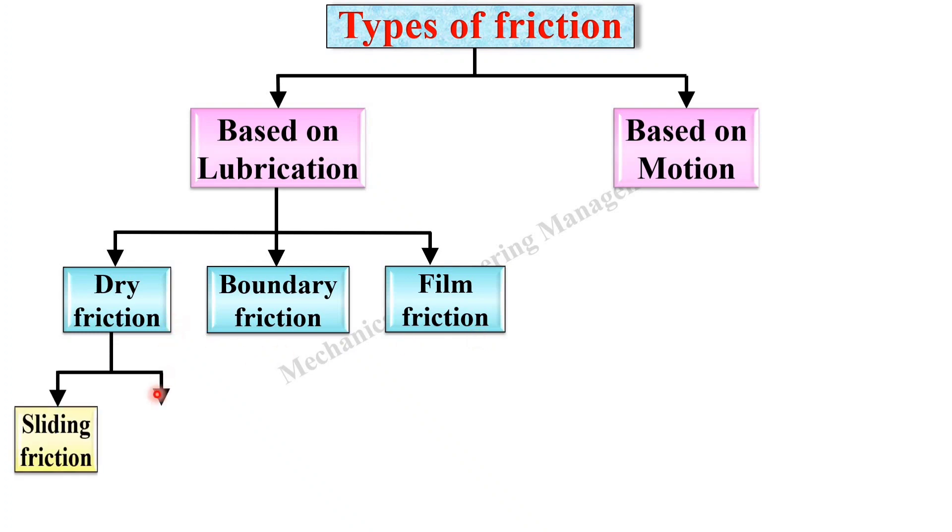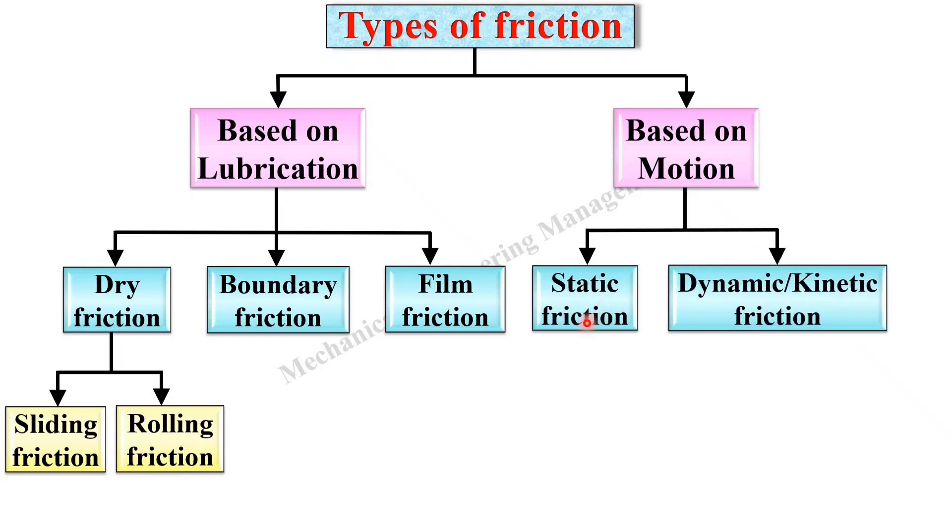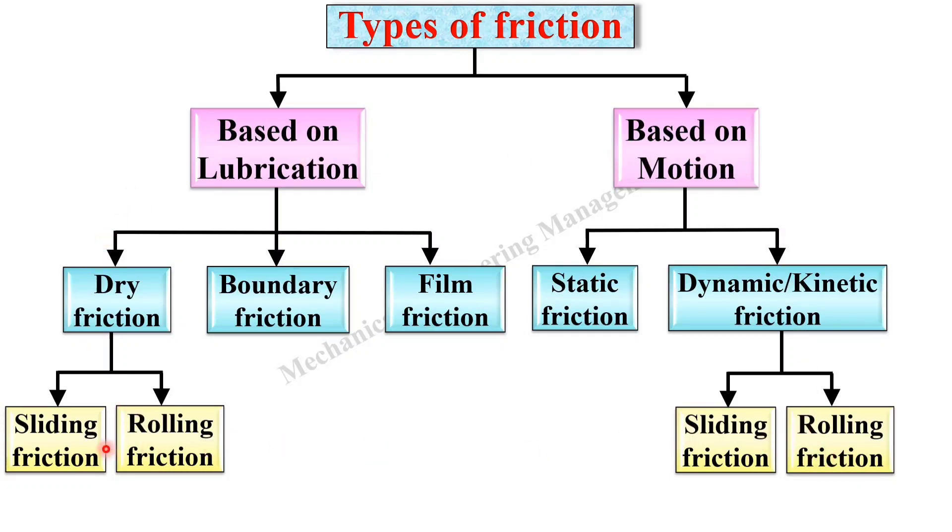According to the motion you can classify the friction in two categories as static friction and dynamic friction. This dynamic friction is also considered as kinetic friction. Kinetic friction is again classified in two different categories as sliding friction and rolling friction. In the next video we will see all types of the friction in details.